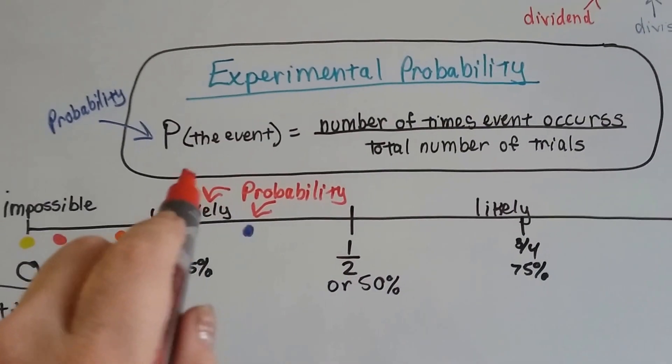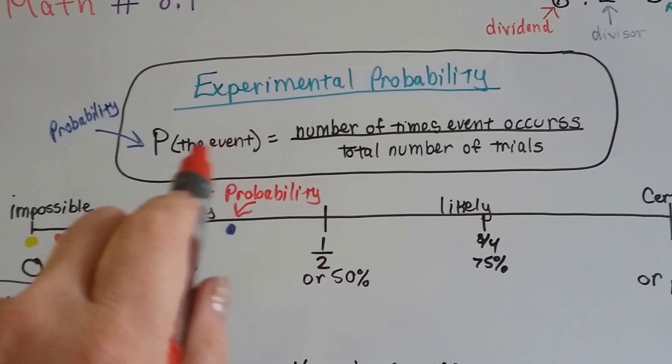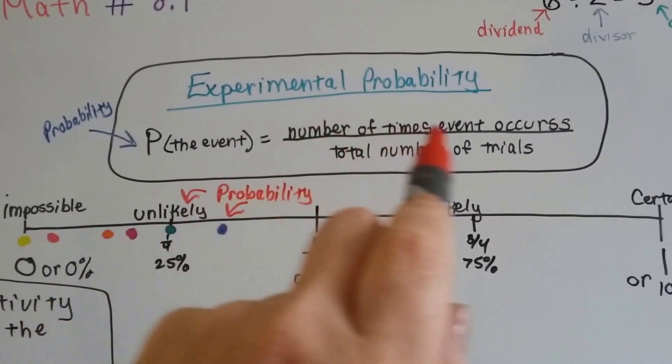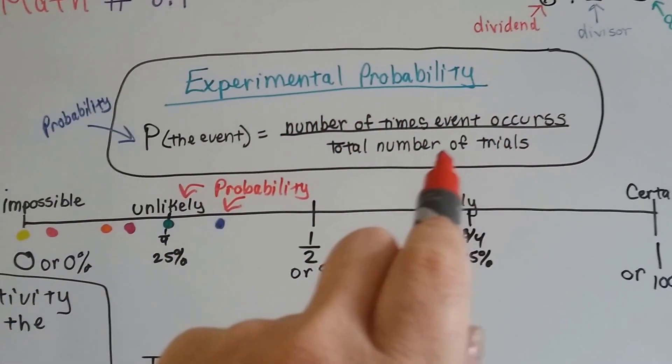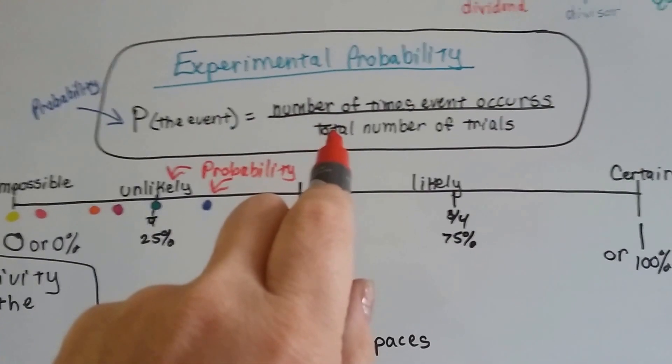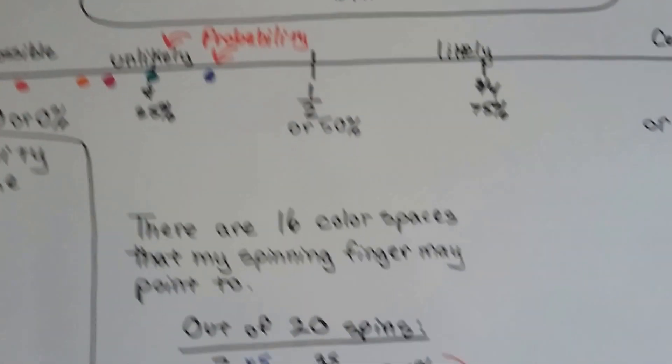So your fraction is going to be the P, and whatever the event, or the number, or the thing that you're doing, and you put the number of times that it occurred over how many times you tried to make it occur. Like I spun the hand 20 times.